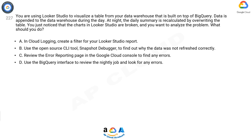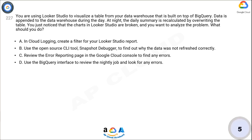A. In Cloud Logging, create a filter for your Looker Studio report. B. Use the open-source CLI tool, Snapshot Debugger, to find out why the data was not refreshed correctly. C. Review the error reporting page in the Google Cloud Console to find any errors. D. Use the BigQuery interface to review the nightly job and look for any errors.